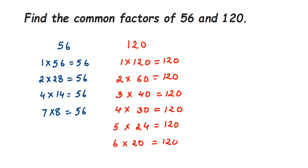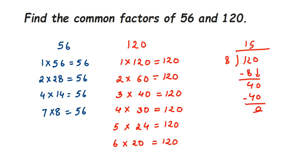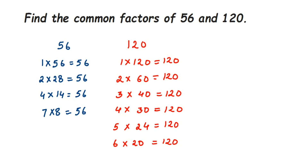It doesn't go in the 7 times table. For 8, since 120 is even there's a chance, so let's check: 120 ÷ 8 = 15, so 8 × 15 = 120. Next, 9 — doesn't go. For 10: 10 × 12 = 120. After 11 — doesn't go. For 12: 12 × 10 = 120, but since we already have 10 × 12, they're the same.